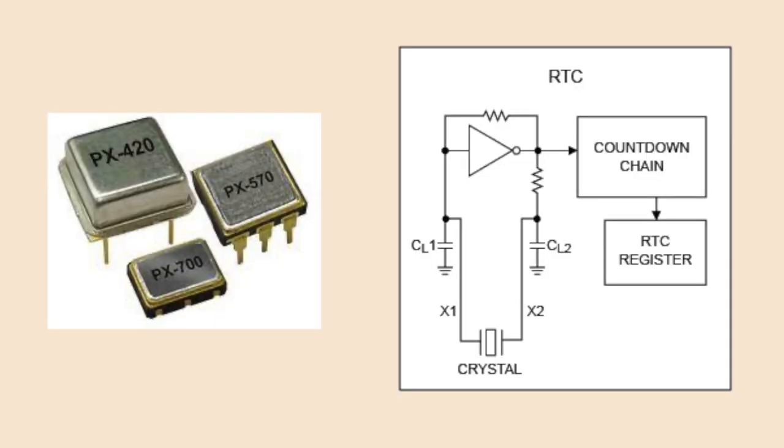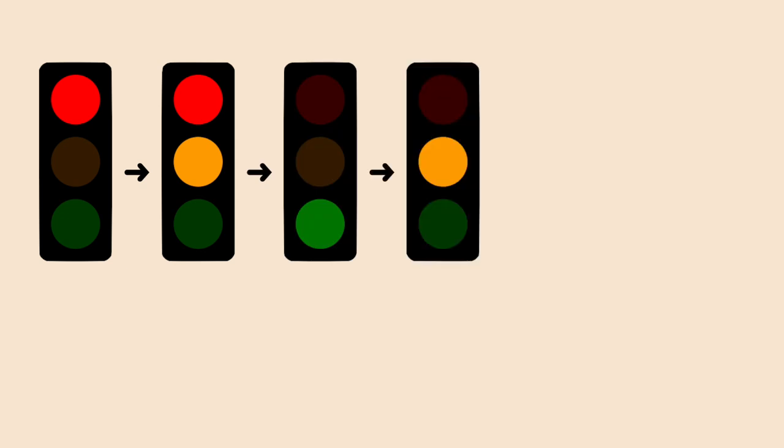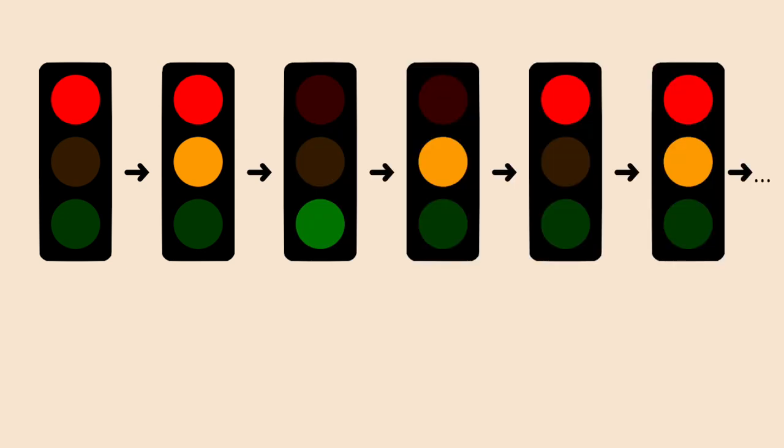Traffic lights usually have a timer. If the timer runs out, the light switches from, say, red to red-yellow. After this switch, a new timer is started, and when it runs out, the light switches from red-yellow to green, from green to yellow, and from yellow to red, starting over.